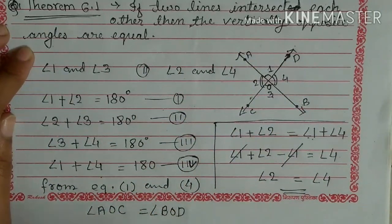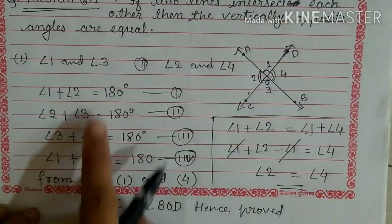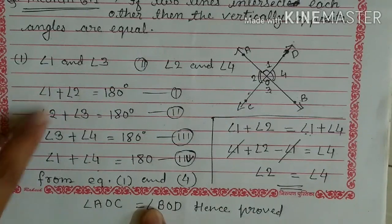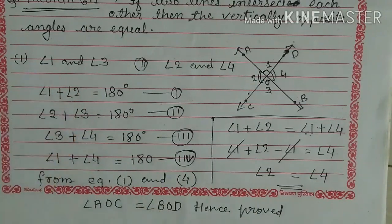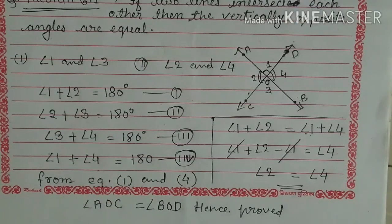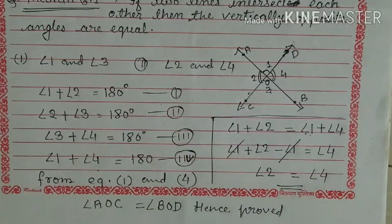तो यह proof हो गया — hence proved. इसी तरीके से equations 1 and 2 लेंगे तो angle 3 cancel हो जाएंगे, angle 2 equal angle 4 बचेगा — vertically opposite. और equations 1 and 3 से angle 2 cancel होगा तो angle 1 equal angle 3 बचेगा — यह भी vertically opposite angle है. Revise this and write in your fair copy. आपकी book में भी यह दिया हुआ है, तो given आप अपनी book से लिख लेंगे।